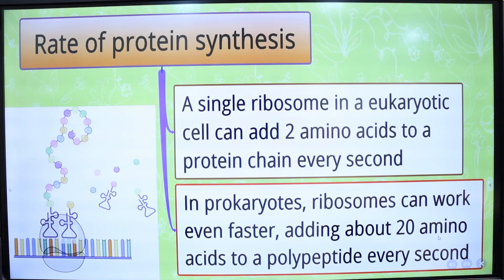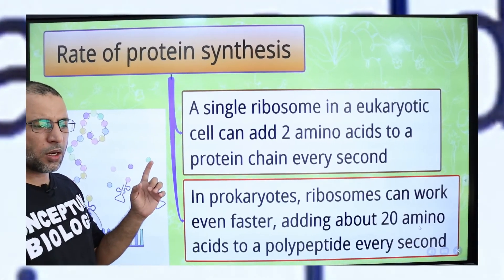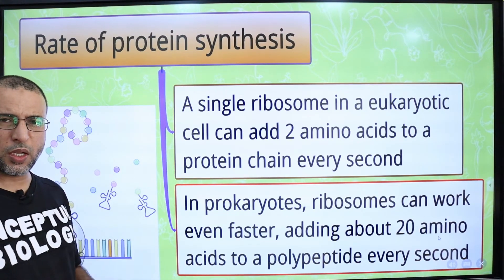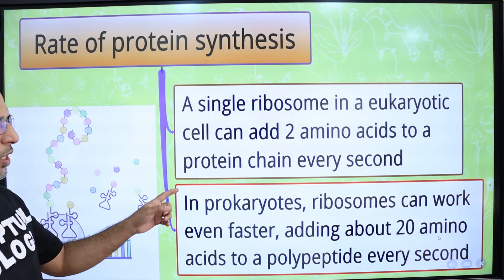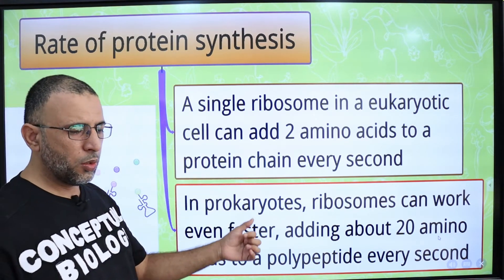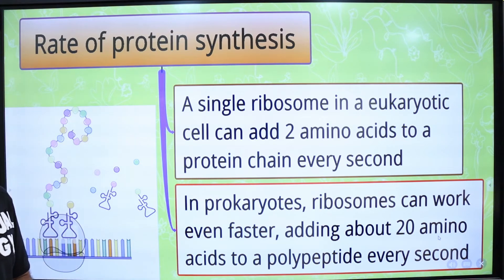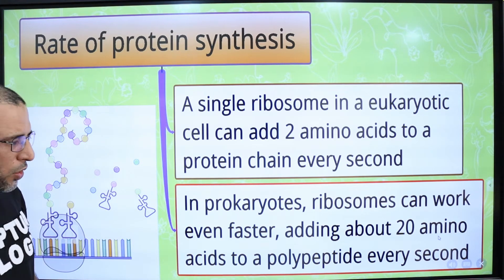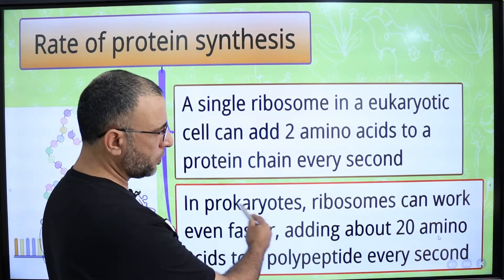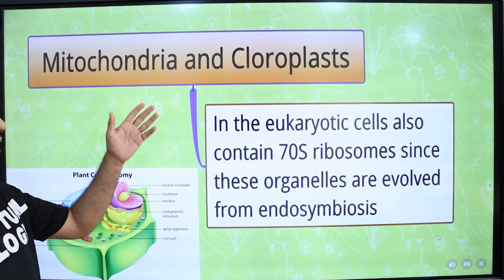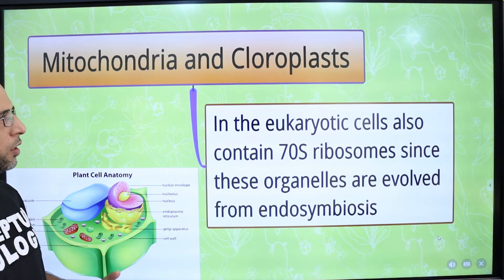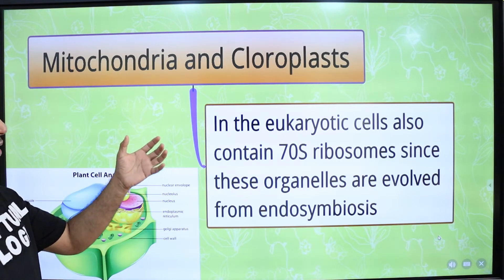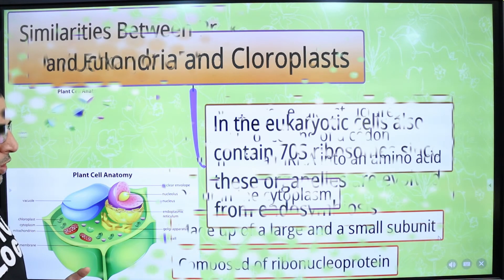Regarding the rate of protein synthesis: a single ribosome in a eukaryotic cell can add 2 amino acids to a protein chain every second. In prokaryotes, ribosomes work faster and can add 20 amino acids per second. Mitochondria and chloroplasts are present in eukaryotic cells, but inside them, prokaryotic ribosomes are present.